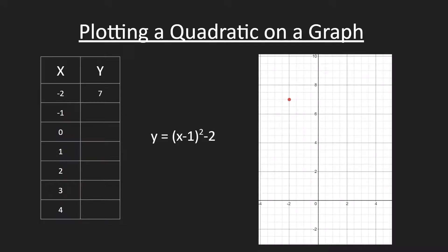When x is negative 2, we can plug in negative 2 into the equation. Negative 2 minus 1 is negative 3. Negative 3 squared is 9 and 9 minus 2 is 7. So the y value when x is negative 2 is 7. We can plot that point negative 2 comma 7 onto the graph.